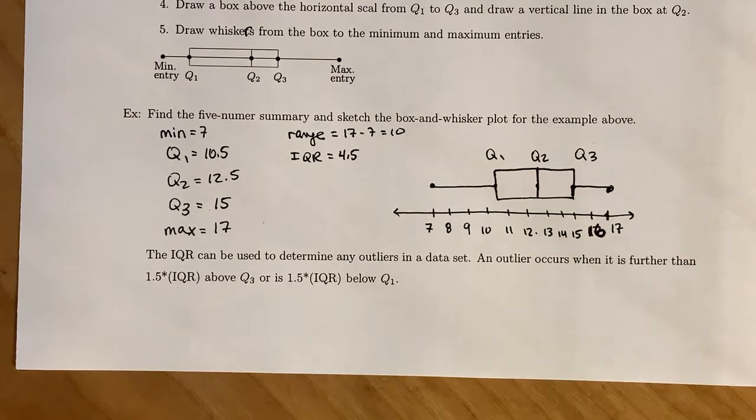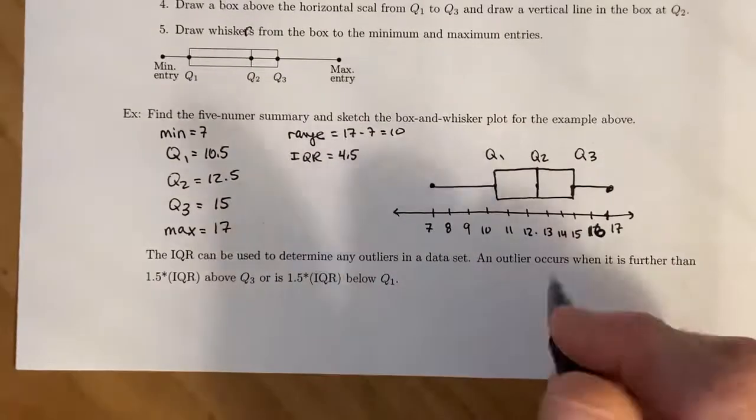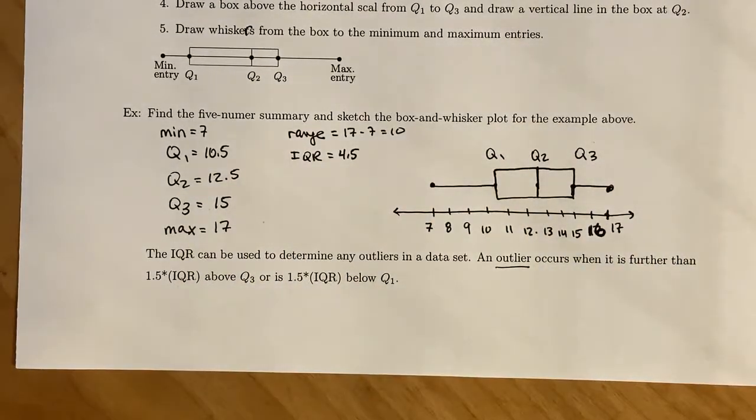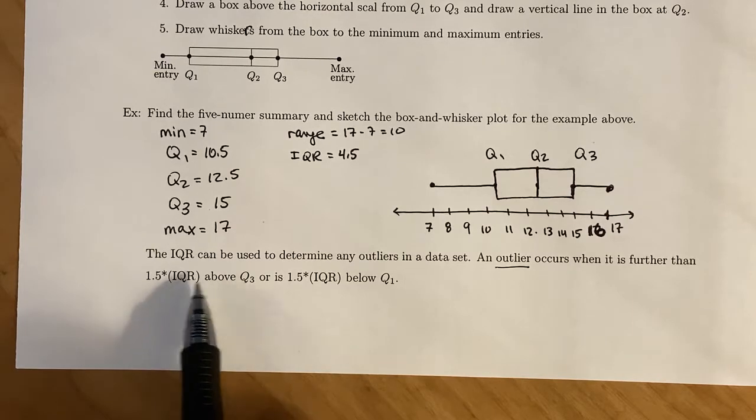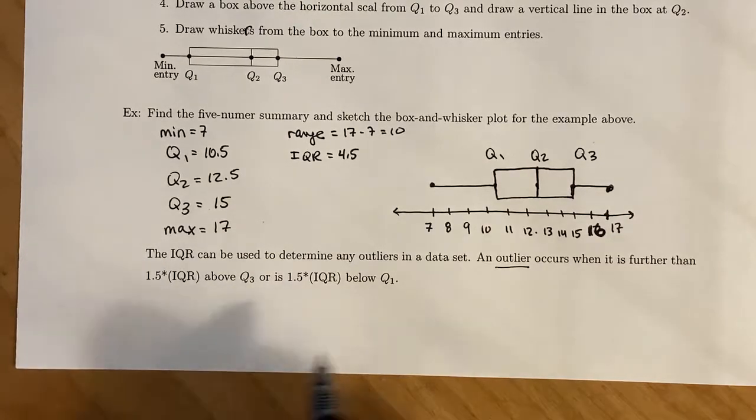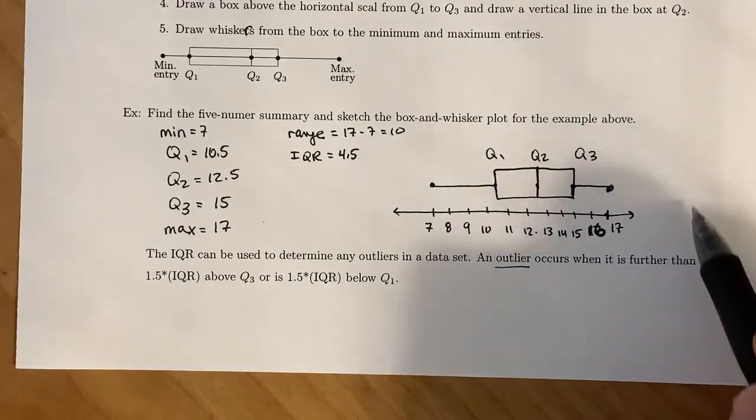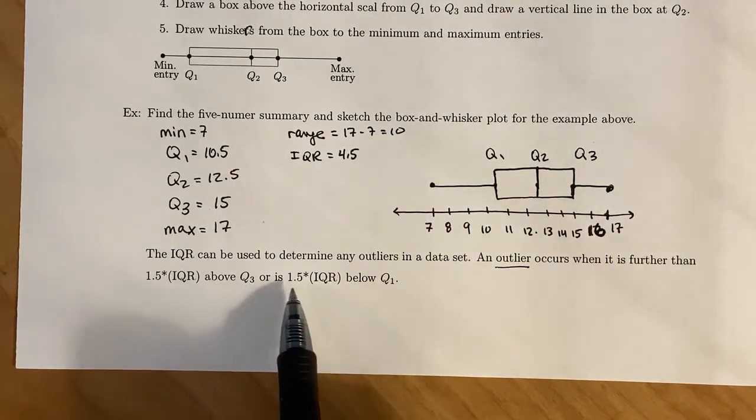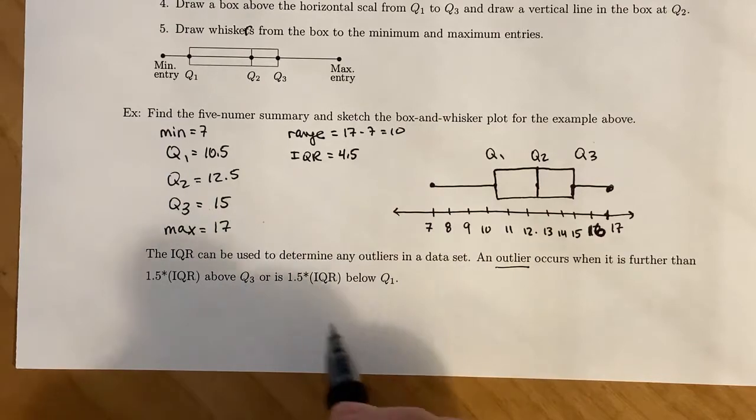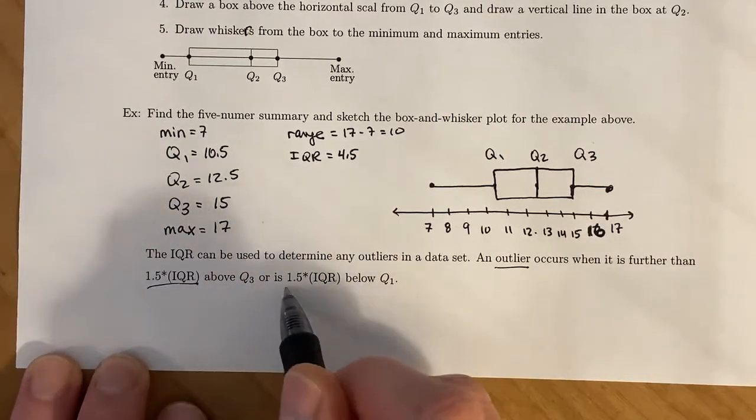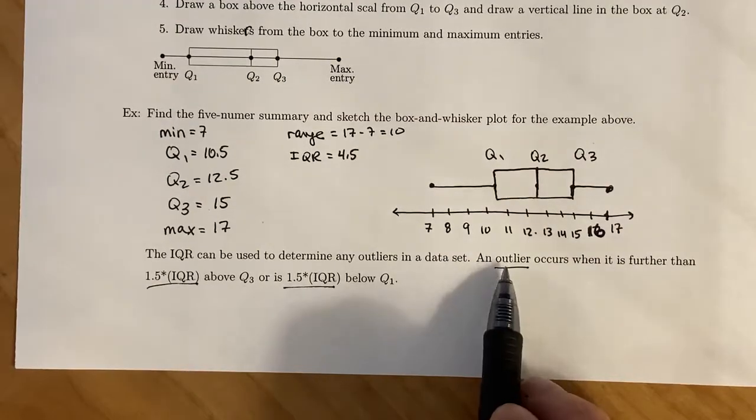The IQR is the thing that allows us to determine if we have any outliers in our data set. An outlier—those are the values that are kind of far out and that may affect our interpretation of the data—is one that is larger than 1.5 times the IQR above the third quartile, or it's 1.5 times the IQR below the first quartile. So 1.5 times IQR is a very important concept to remember when you're determining outliers.